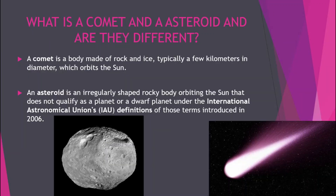The next doubt in your mind might be: what is a comet and an asteroid? Well, according to the clear definitions, a comet is a body made of rock and ice, typically a few kilometers in diameter, which orbits the sun. So a comet is a very big rock which has a lot of ice and it orbits the sun.